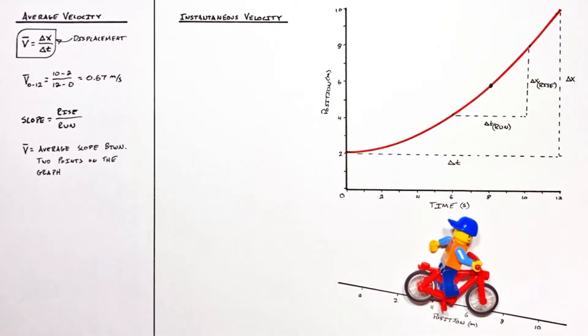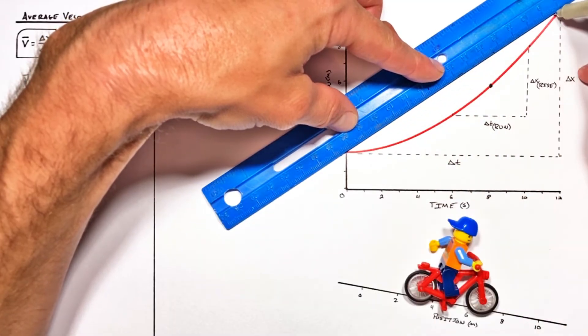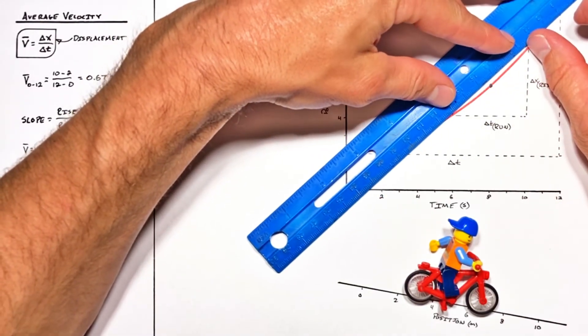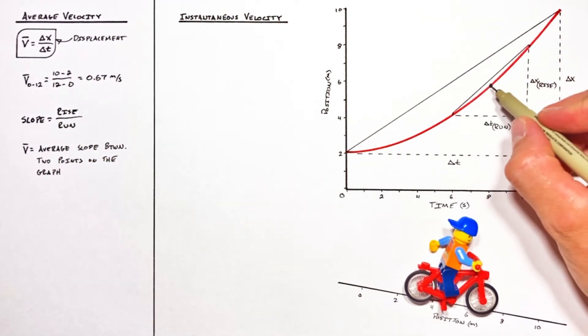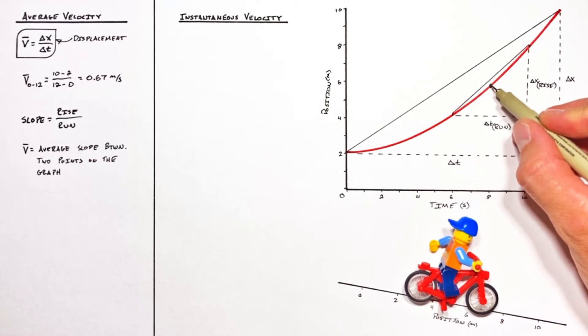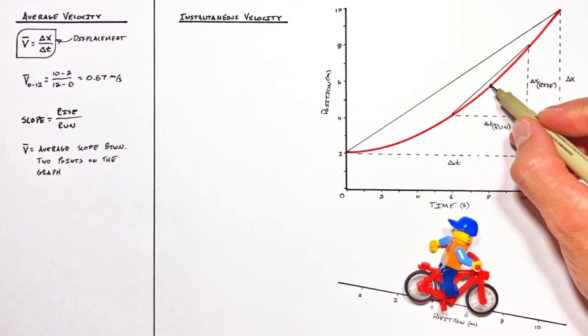And it's in looking at average velocity conceptually that allows us to understand what instantaneous velocity actually is. See, when we started with a large time interval, the average slope along that time interval was some line that sat out here. As we shortened up that time interval, we got a line that sat more like this. And if we want to find out the speed or the velocity exactly at this instant, what we need to do is look at a line that actually falls not between two points, but rather falls tangent to the graph.